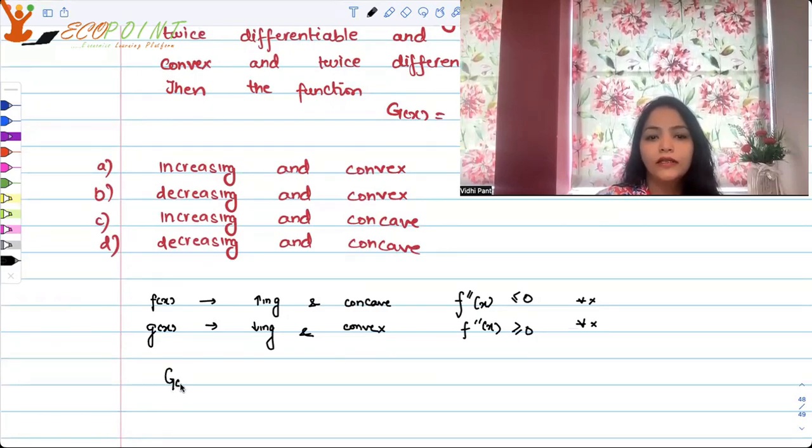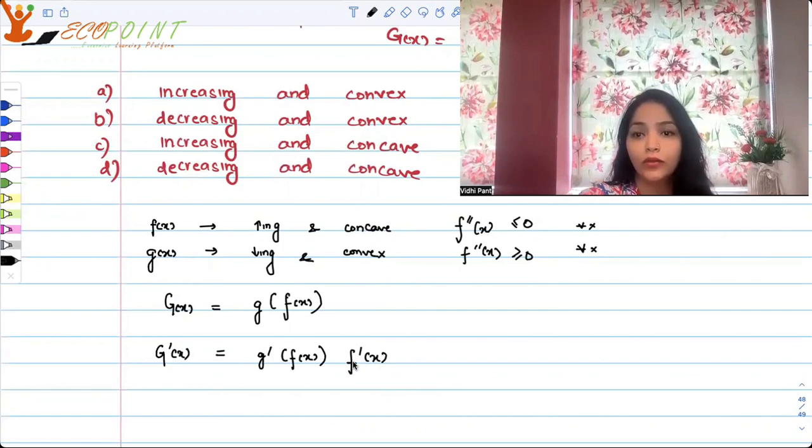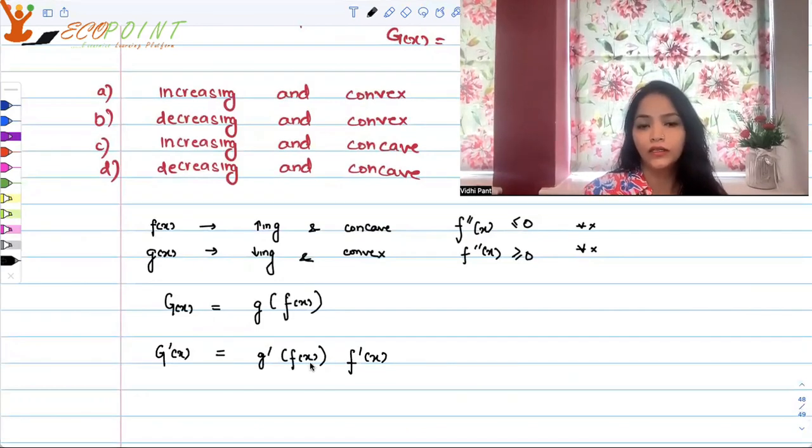Now we are considering G(x) = g(f(x)). In order to figure out from the options, you have to determine increasing, decreasing, concave, or convex. So since it's a differentiable function, we can figure out the derivative. Let's take the first derivative. G'(x), differentiating the composition using chain rule, you will get g'(f(x)) multiplied by f'(x).